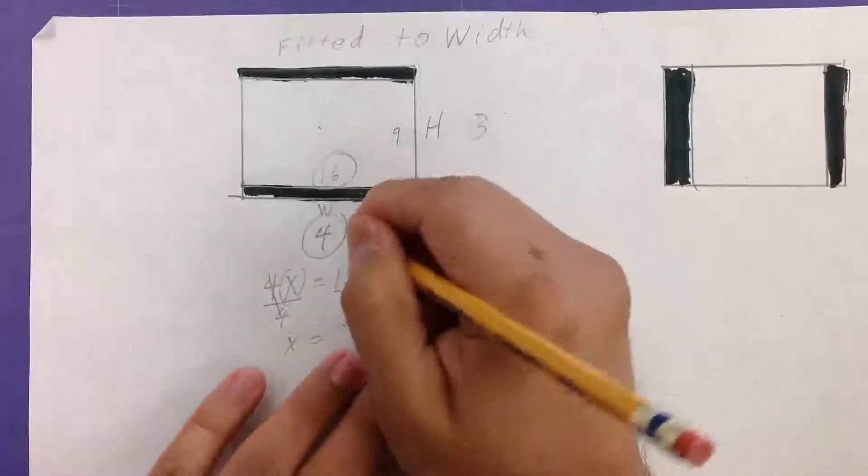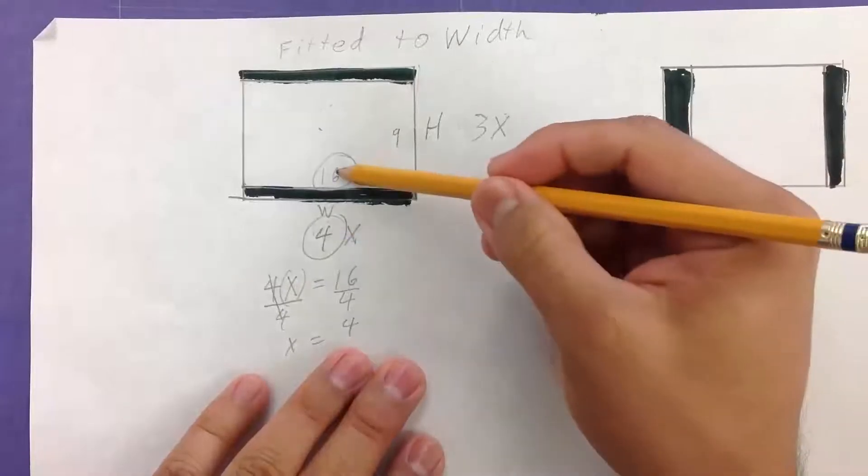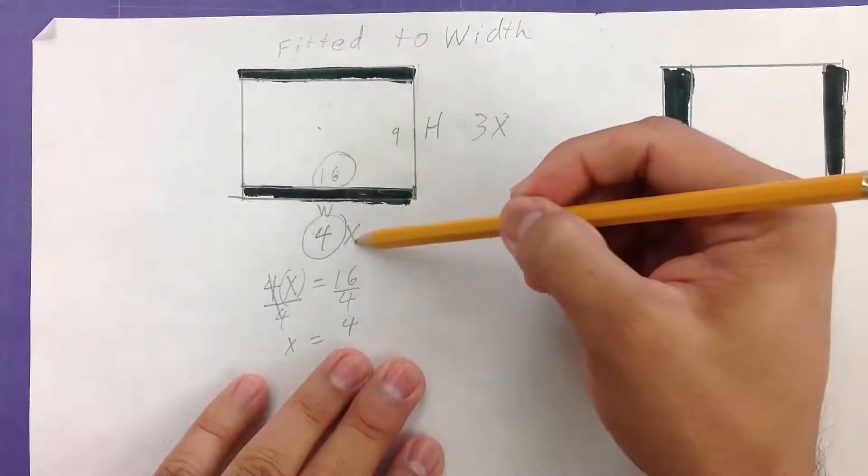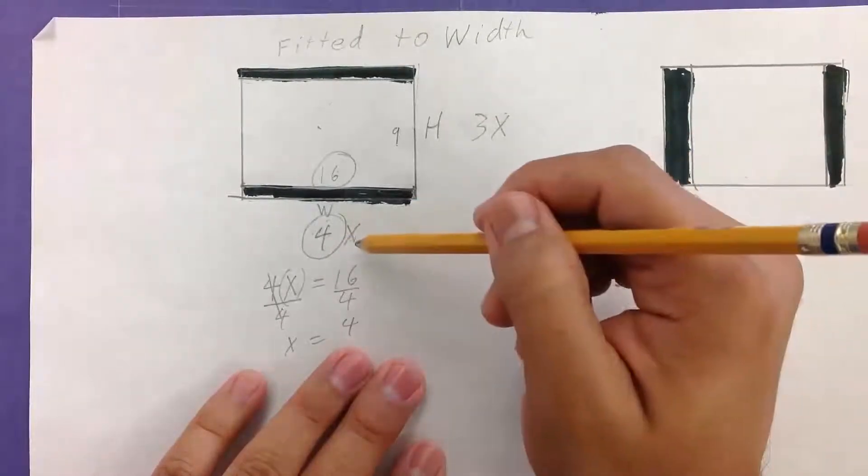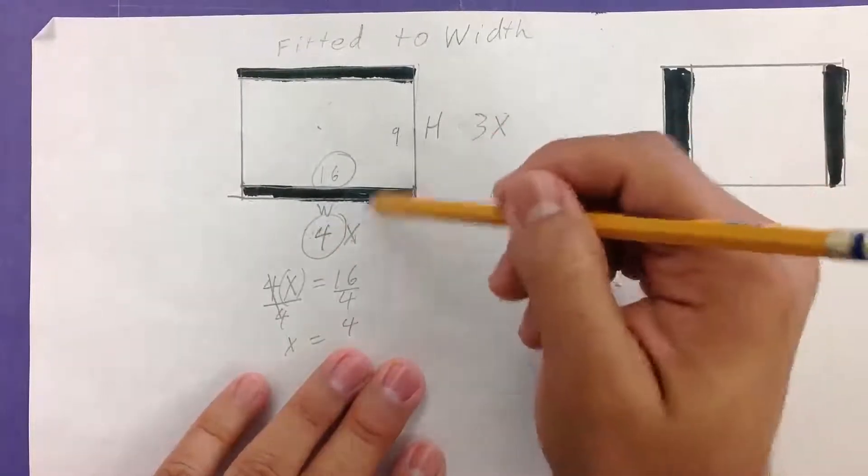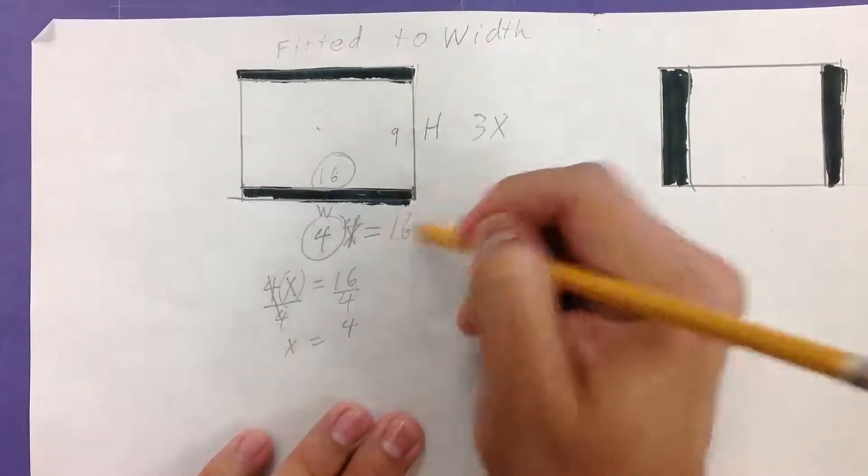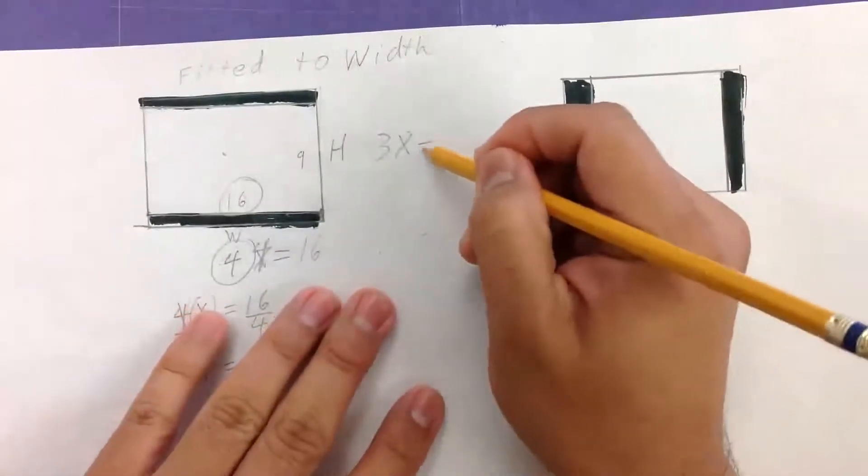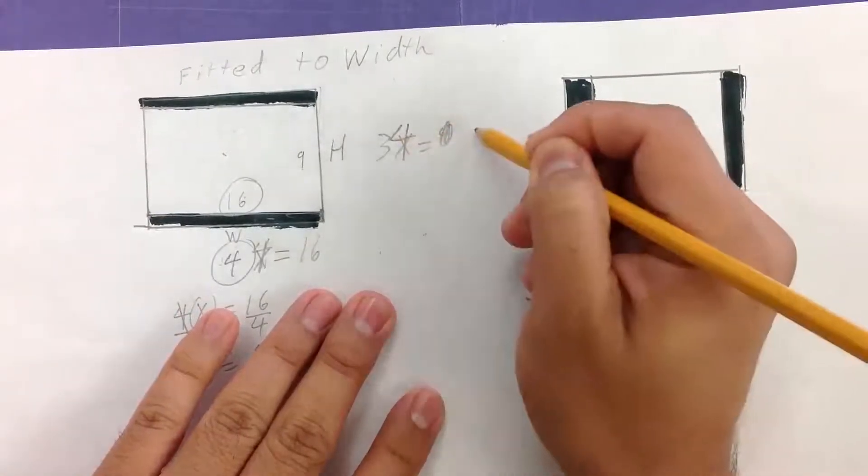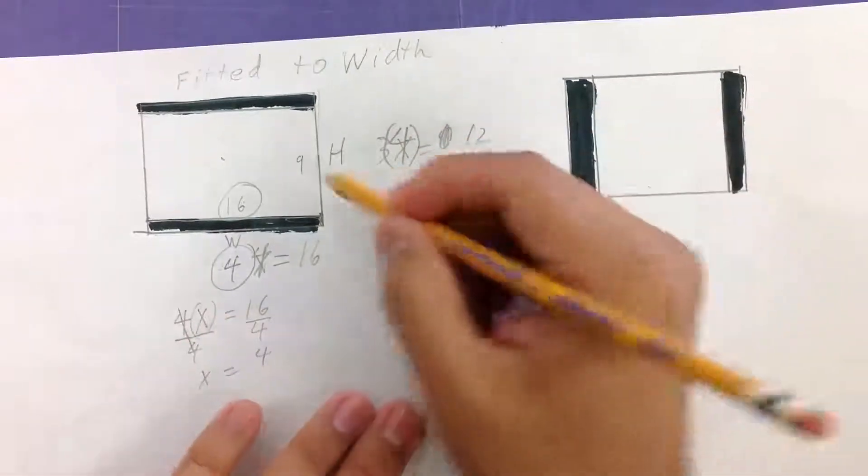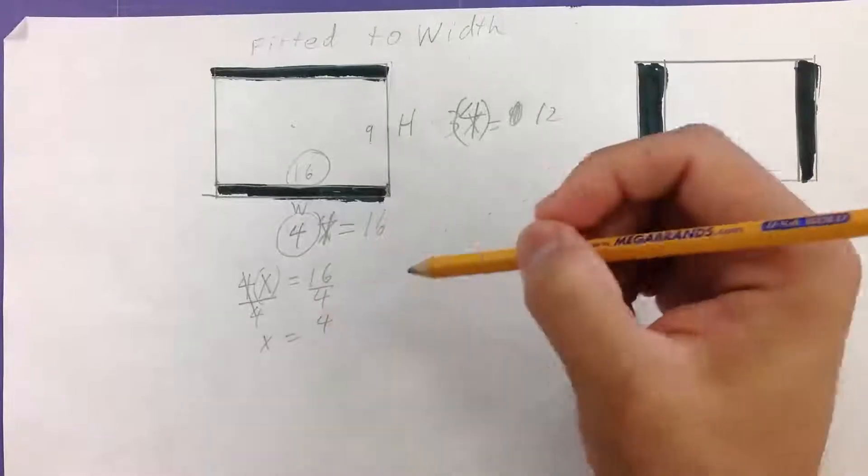That tells me, since we're going from this big number to this small number, we're going to use this scale factor. 4 times 4 is 16, and then 3 times 4 would be 12. So now we know that this height is 12 and this width is 16.